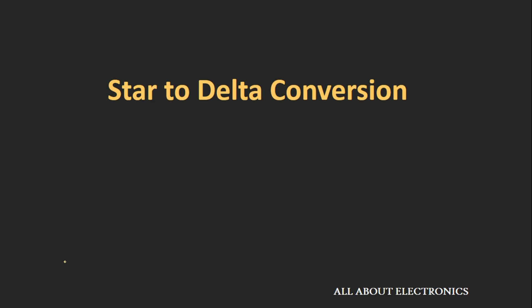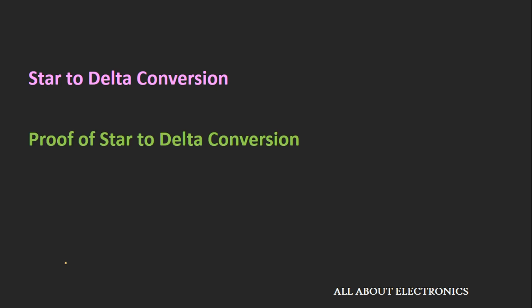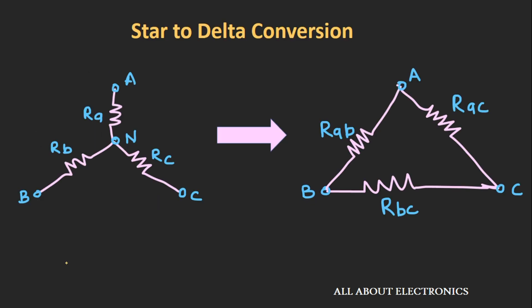Welcome to the YouTube channel all about electronics. In the last video we saw what is a star network and delta network, and how to convert a delta network into the equivalent star network. In this video, first we will see how to convert a star network into the equivalent delta network using a very simple technique. Then we will derive the expression for the star-to-delta conversion, and at the end, using one example, we will understand how this star-to-delta conversion is useful in solving circuit problems.